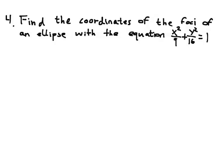For number 4, we're given the equation, and we have to find the foci. From this equation, you can immediately find A and B. A is just the bigger one, and B is the smaller one. Of course, those are the square of the values.